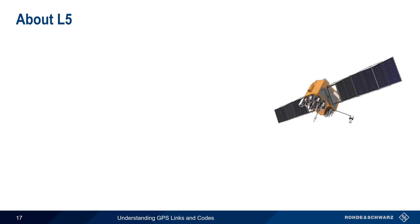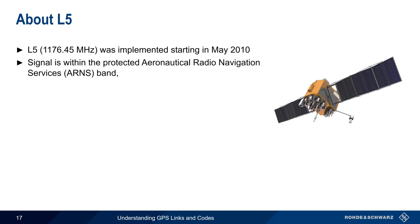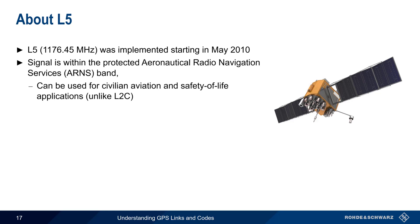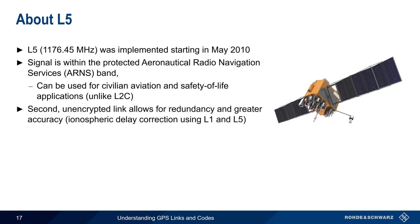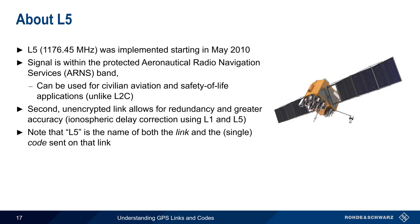The newest member of the GPS link family is L5, which was implemented starting in May 2010. Unlike L2C, L5 is within a protected band, and this means that L5 can be used for civilian aviation or safety of life applications. Having L5 as a second, unencrypted link provides both redundancy and high accuracy through ionospheric delay correction. In fact, L1 and L5 are farther apart in frequency than L1 and L2, so L5 allows for more precise ionospheric correction. And lastly, note that L5 is both the name of the link, as well as the name of the single code that's sent on this link.